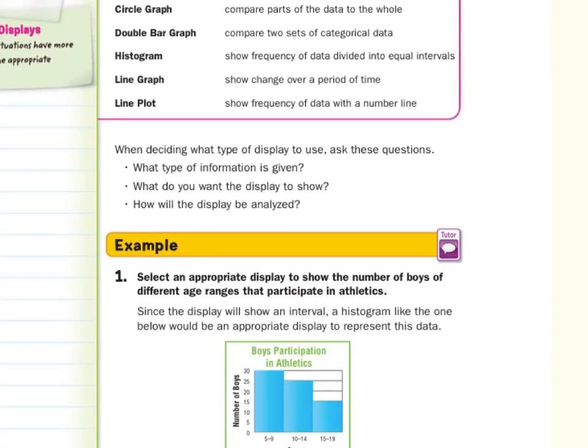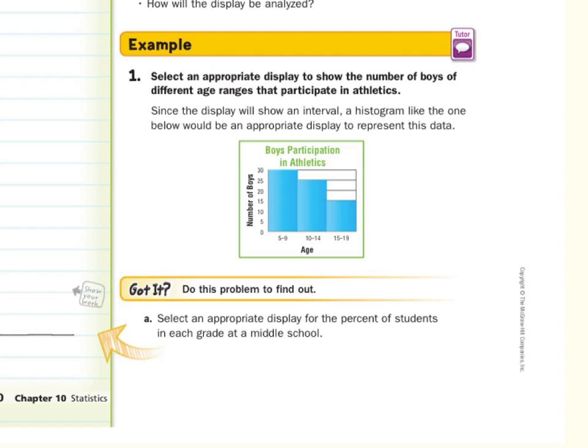And so as we look at our first guided example, select an appropriate display to show the number of boys of different age ranges that participate in athletics. Well, our key here that I would lock into, different age ranges. That means we're showing an interval. And whenever we're showing an interval, our histogram is going to be the best choice. And you can see the one that they kind of sketched in below. So you could see the different age ranges, five to nine, 10 to 14, 15 to 19.